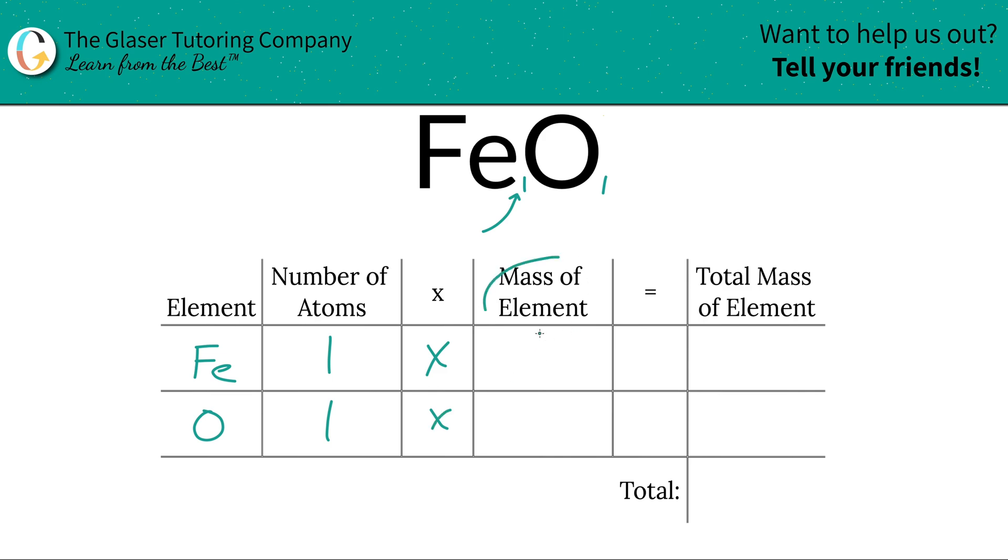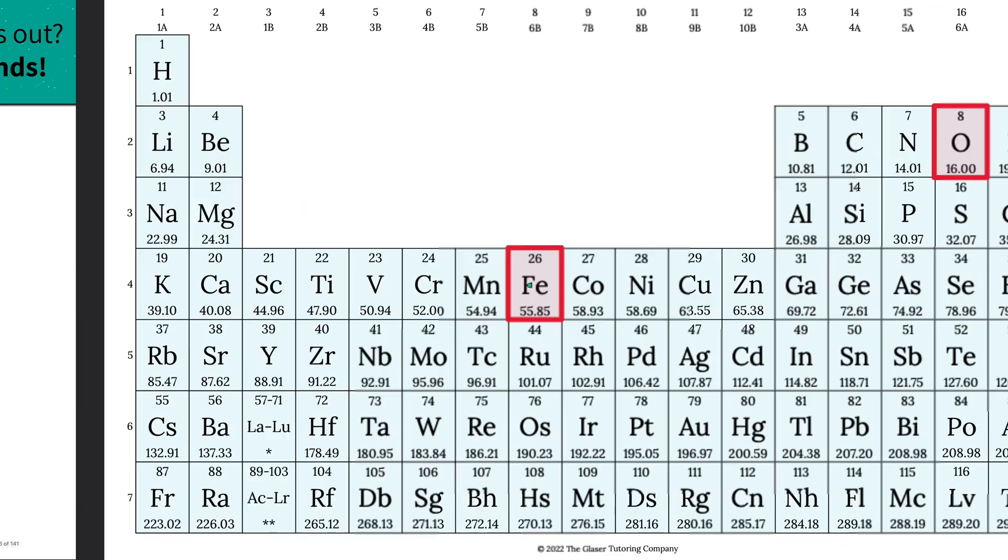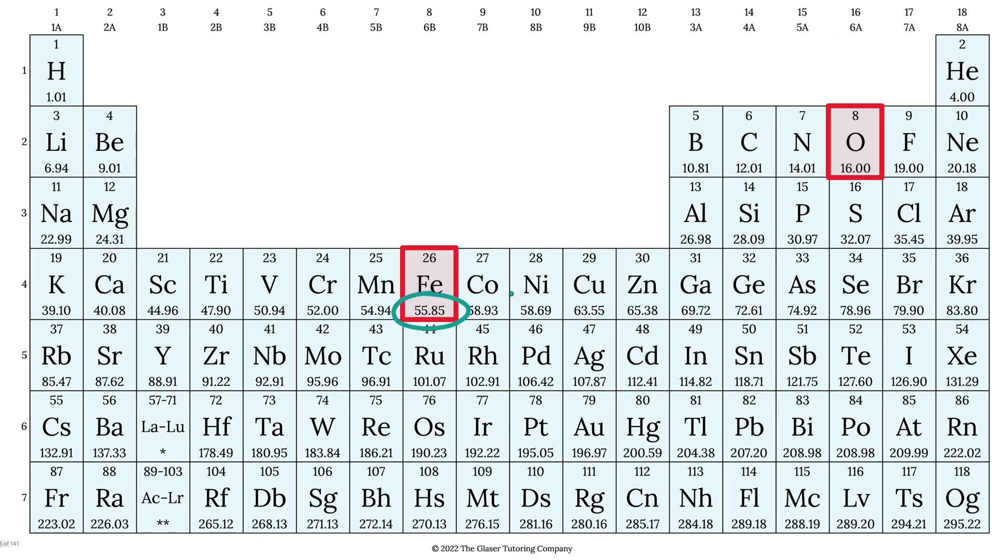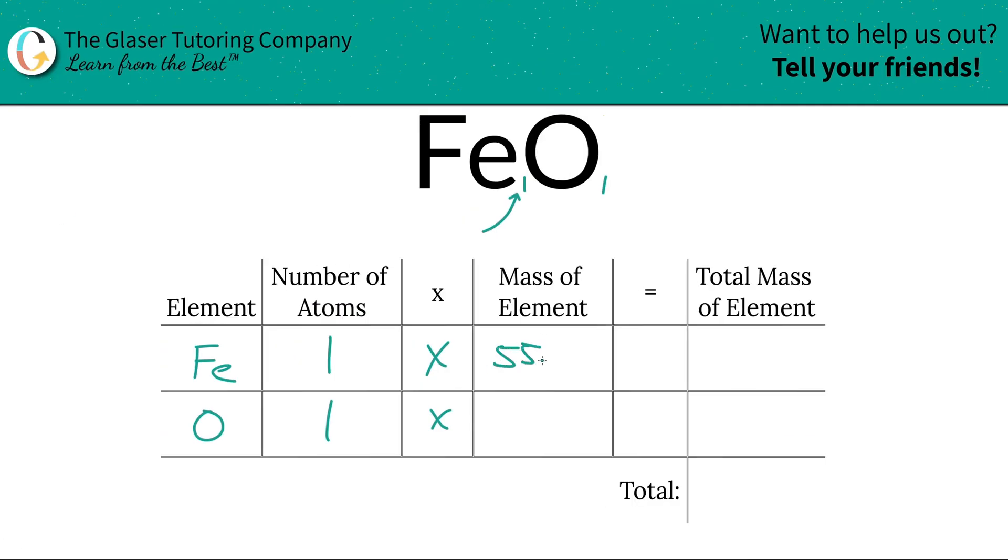Then we're going to multiply those number of atoms by the mass of each element. Those masses are found on the periodic table. So let's take a look. Here's iron, 55.85. Here's oxygen, 16. So those are the masses we're going to write down. So this is 55.85. Oxygen is 16.